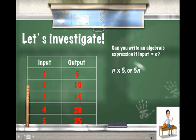So by putting 1 in the place of n here, 1 times 5, which would give us 5. Mathematicians like the shortcut, we write it as 5n.